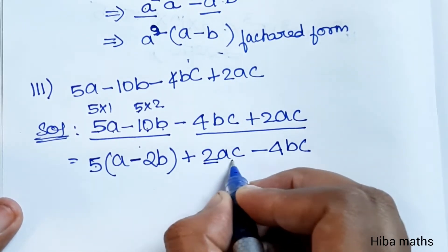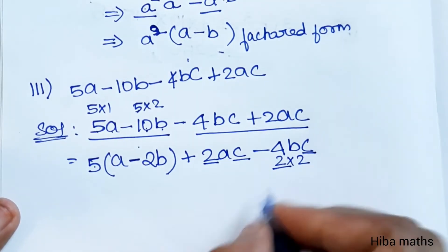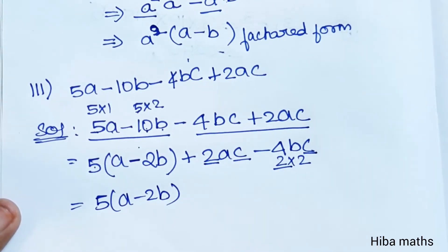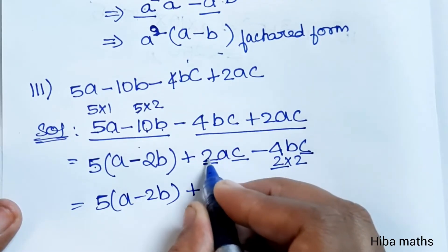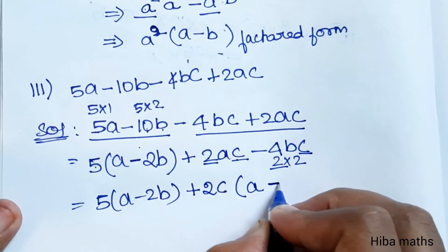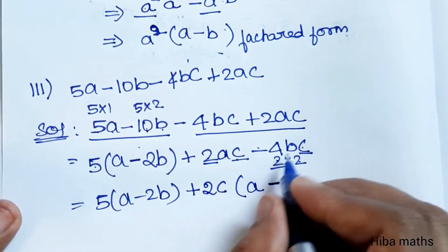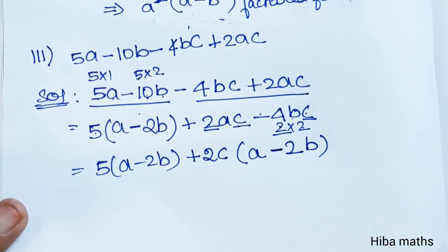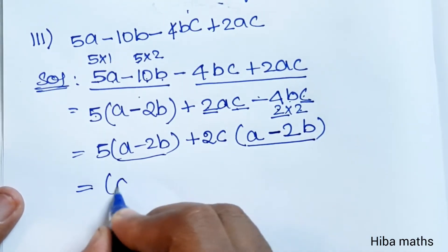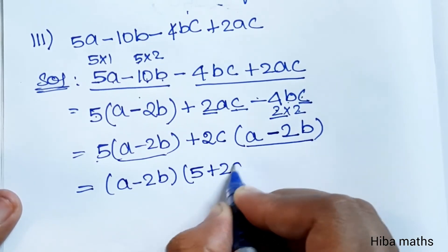Now both groups have the common bracket a minus 2b. So we take a minus 2b as common. The factored form becomes bracket a minus 2b into bracket 5 plus 2c. This completes the factorization of 5a minus 10b plus 2ac minus 4bc.